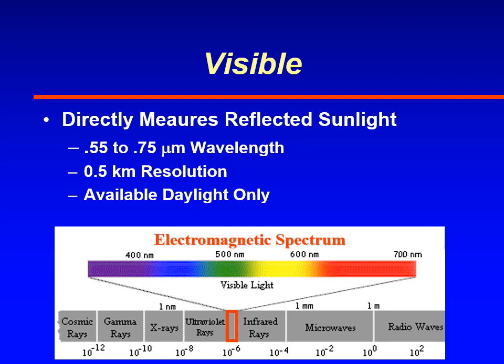Remember that the sun is only shining during the day, at least on the daylight side of the Earth. So visible satellite imagery is only available during daylight. You can't see anything on the dark side of the Earth.